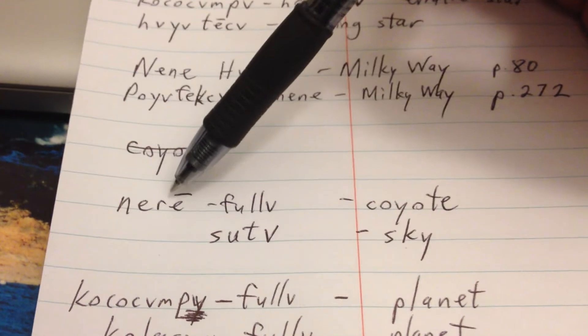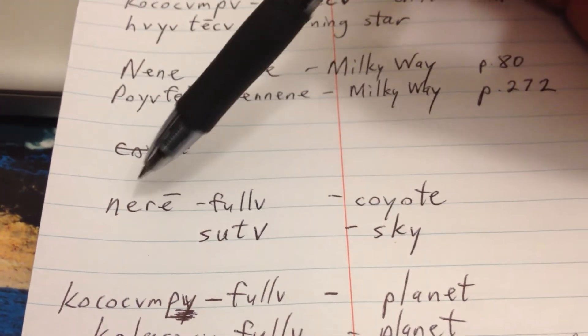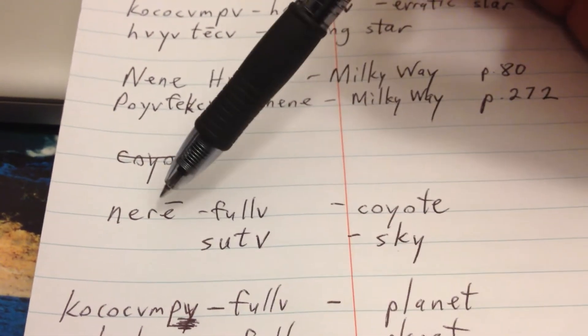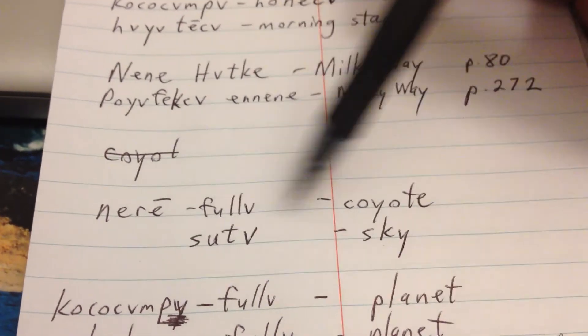Now we come down to nithli fula, which means night fula, wanderer, night wanderer, coyote. Sutta for sky.